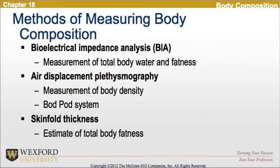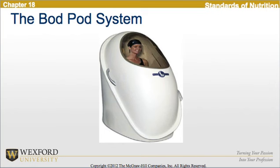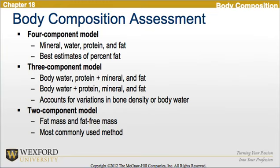Here is a diagram of the BOD-POD system. Looking at body composition assessment, the four-component model includes mineral, water, protein, and fat, providing the best estimates of percent fat. The three-component model looks at body water, protein plus mineral, and fat, accounting for variations in bone density or body water. The two-component model looks at fat mass and fat-free mass and is the most commonly used method.